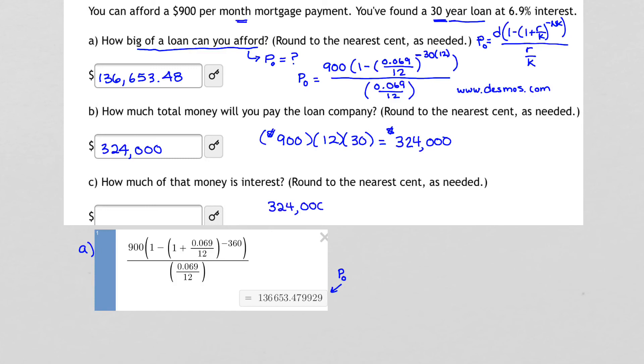That gives us the amount of interest that we've paid to the loan company. Again, pulling out a scientific calculator or using Desmos, you should get that the difference between those two numbers is $187,346.52.